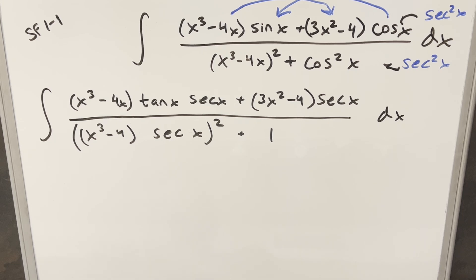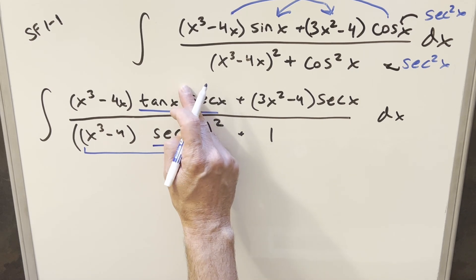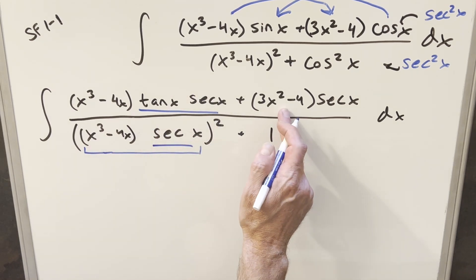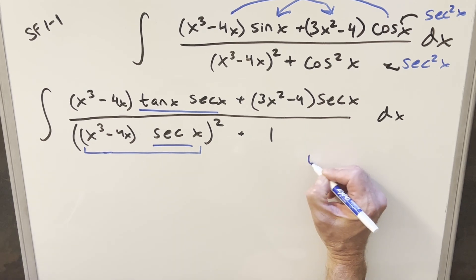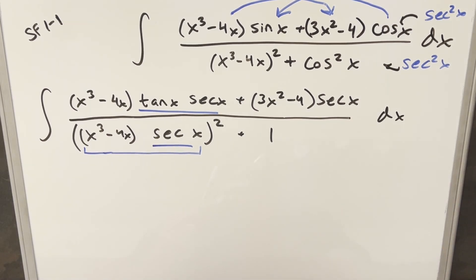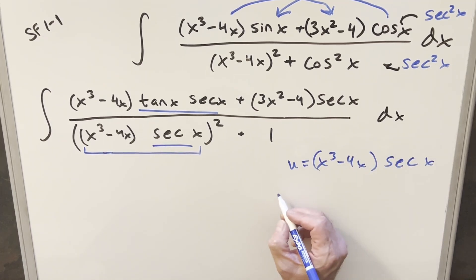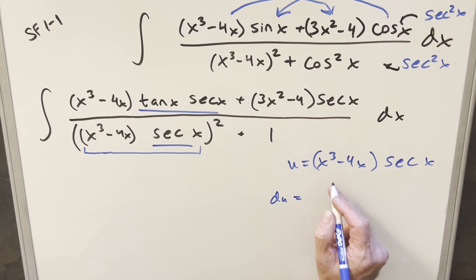And then at this point, what I can do is just a u substitution on this because you'll notice the derivative of secant x is going to be right here. The derivative of x cubed minus 4x, that's just going to be the 3x squared minus 4. So this is going to work out pretty nice. This is going to work pretty well with product rule. So I'm going to do the substitution for all this stuff.